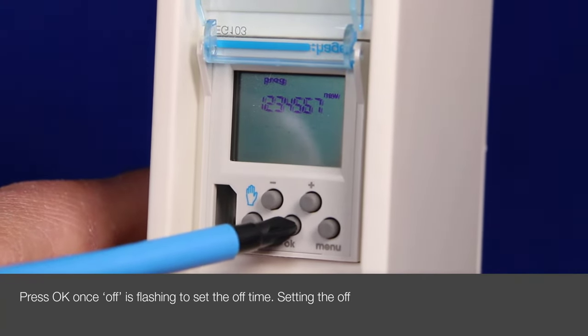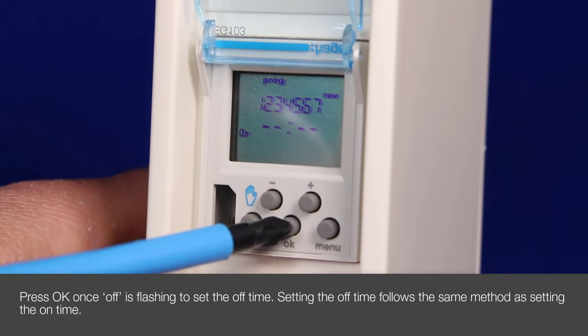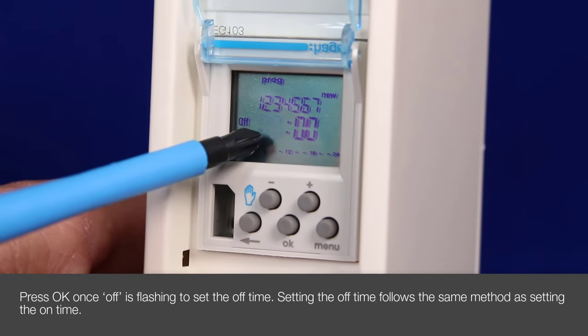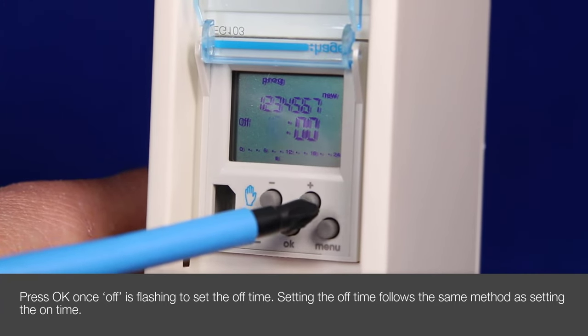We can now see that off is flashing indicating that it is asking us to program the off time. If we program the off time we simply say OK. And as you can see the hours start flashing again starting from 0900 because that's where the on time is programmed.